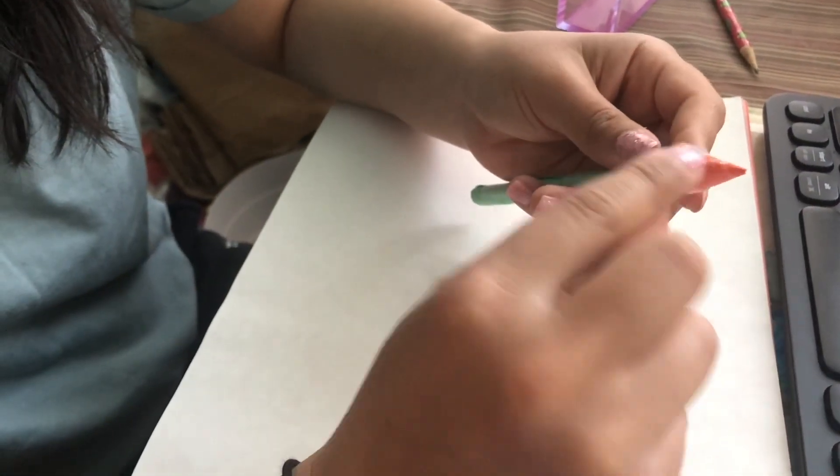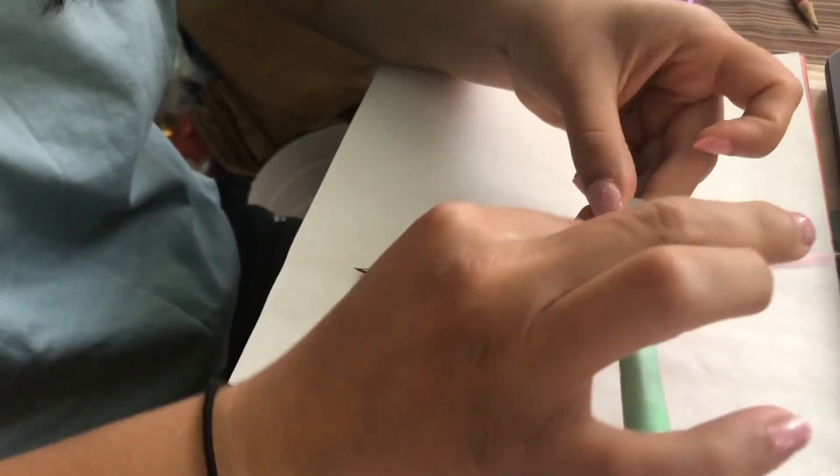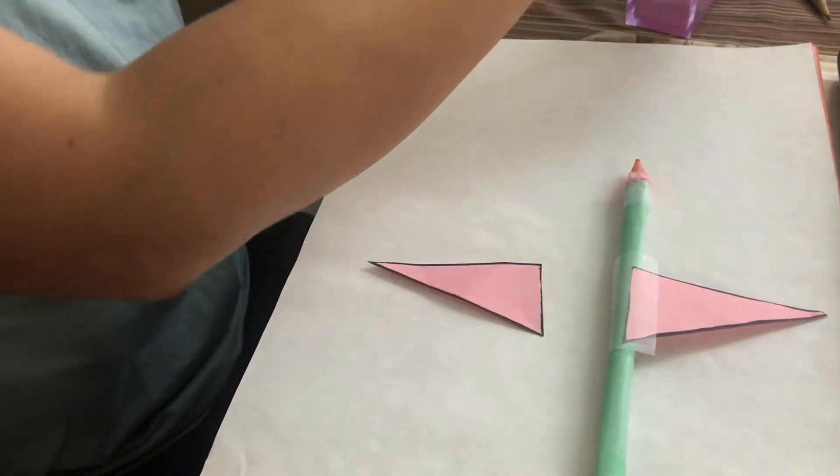Then we're going to make your rocket's nose using the cone. Once you've secured it tightly on the end, we're going to take your two triangles to make your rocket's wings. We're going to put some more tape so the wings don't come off.